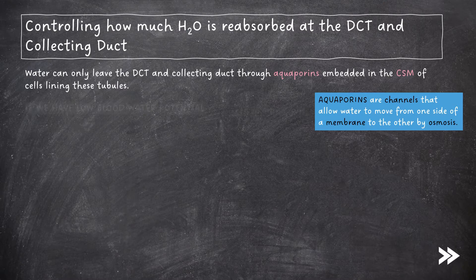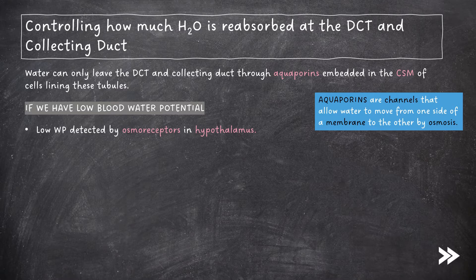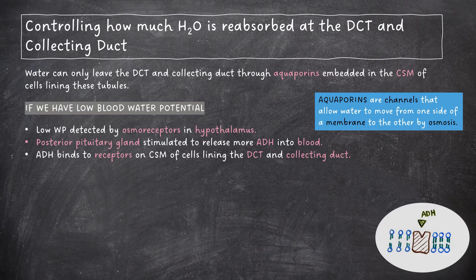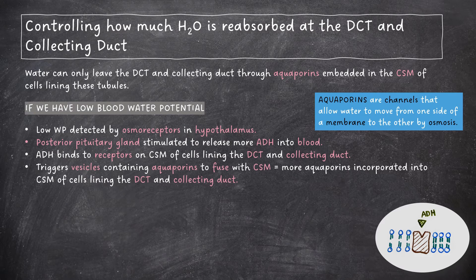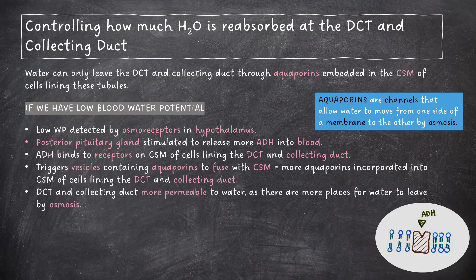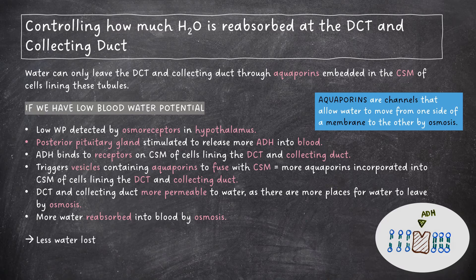If we have a low blood water potential, this is detected by osmoreceptors in the hypothalamus. The posterior pituitary gland is stimulated to release more ADH into the blood. ADH binds to receptors in the cell surface membrane of cells lining the distal convoluted tubule and collecting duct, hereby triggering vesicles containing aquaporins to fuse with the cell surface membranes. This means that more aquaporins are incorporated into the cell surface membranes, making these tubules more permeable to water, as there are more places for water to leave by osmosis, meaning that more water can leave these tubules and is reabsorbed into the blood by osmosis. Therefore, less water is lost and urine is more concentrated.